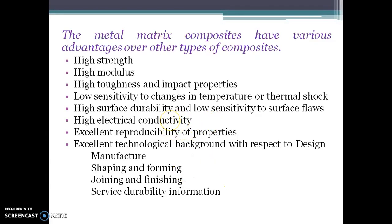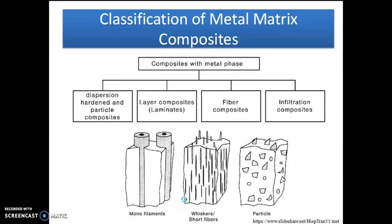What are the basic advantages of metal matrix composites? Metal matrix composites have high strength, high modulus, high toughness and impact properties, low sensitivity to changes in temperature or thermal shock, high surface durability, high electrical conductivity, excellent reproducibility of products, and excellent technical background with respect to design, manufacture, shaping and forming, joining and finishing, and service durability.